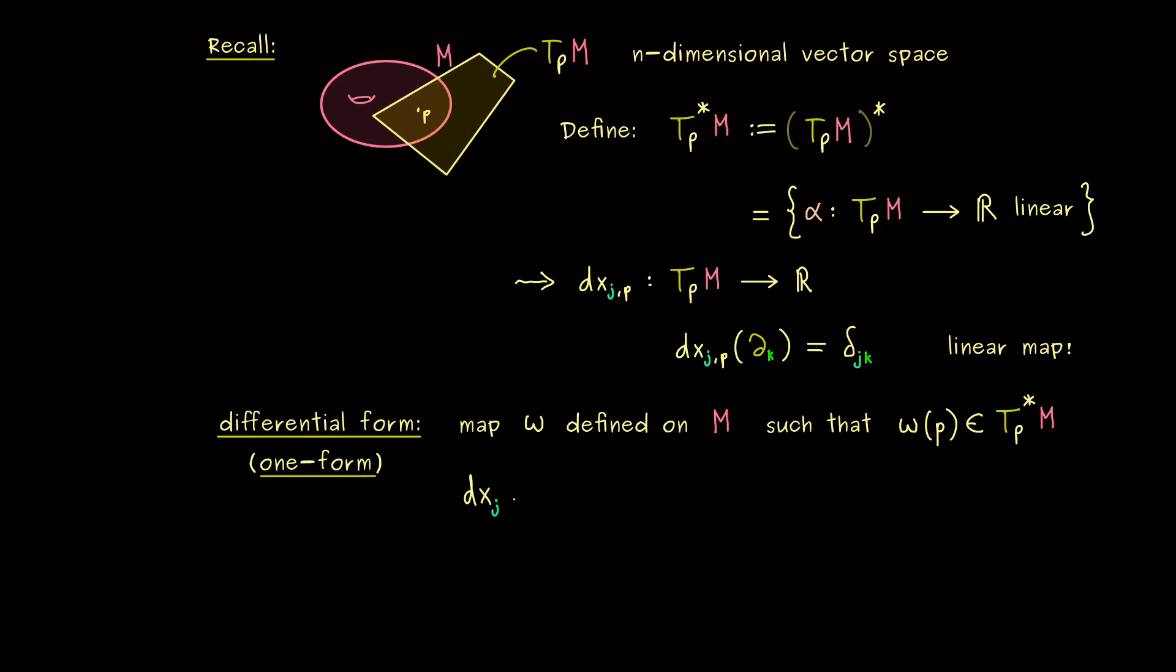In general, this will be just a map we can call omega defined on the manifold M, such that the value omega of p is a special linear map. So for example, we could say it's an element of T*_pM. And there you might already know, this is the special case we call just a one-form.